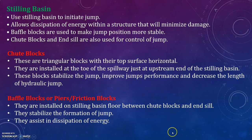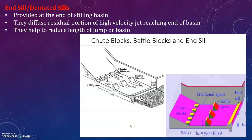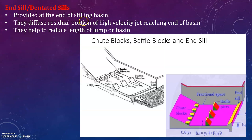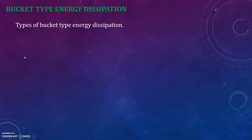Buffer blocks, also called pier or friction blocks, are installed on the stilling basin floor between the chute blocks and end sill. They stabilize the formation of the jump and assist in dissipation of energy. The end sill, or dentated sill, is provided at the end of the stilling basin. It diffuses the residual portion of the high velocity jet reaching the end of the basin and helps to reduce the length of the jump or basin.